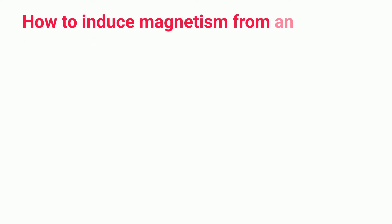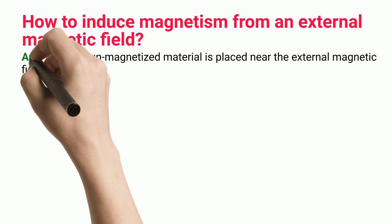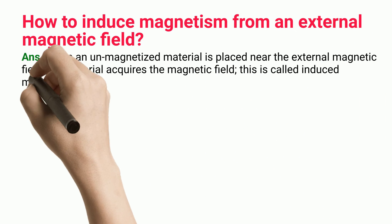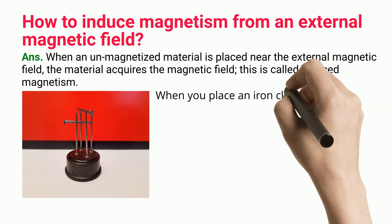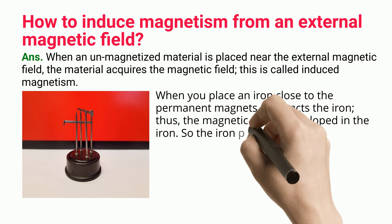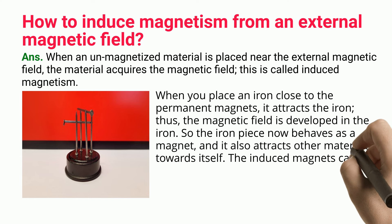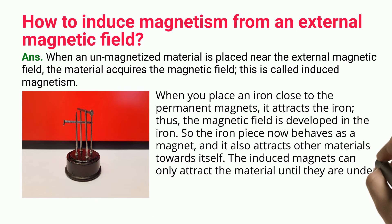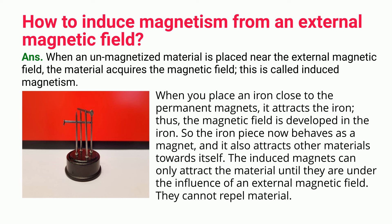How to induce magnetism from an external magnetic field? When an unmagnetized material is placed near an external magnetic field, the material acquires the magnetic field — this is called induced magnetism. When you place iron close to permanent magnets, it attracts the iron, and thus the magnetic field is developed in the iron. The iron piece now behaves as a magnet and also attracts other materials towards itself. The induced magnets can only attract material until they are under the influence of an external magnetic field; they cannot repel material.